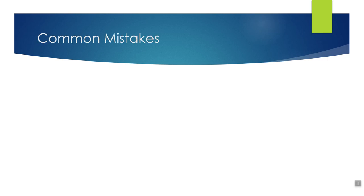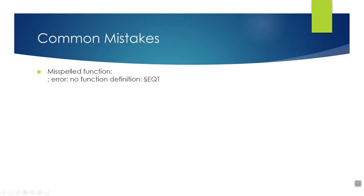There are some common mistakes made by new users of LISP routines. The first is misspelling something — it's easy to misspell things, especially because sometimes they're abbreviations rather than full words. If you misspell the function, it's going to give you an error saying there's no function definition, for example 'S-E-Q-T' instead of 'setQ'.